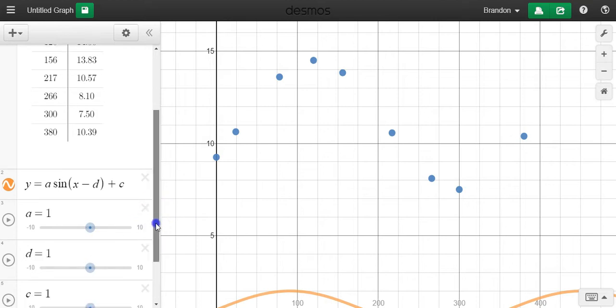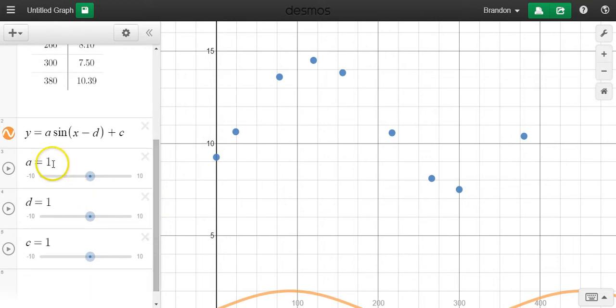So what we are going to do though, is we have these other three. A is a change in amplitude. D is going to be a horizontal shift or translation. And C is a vertical shift or translation.